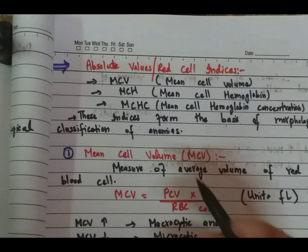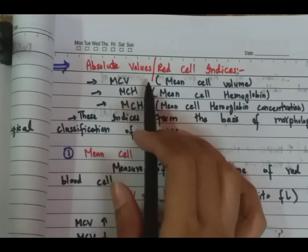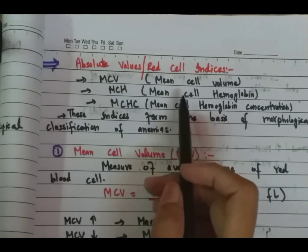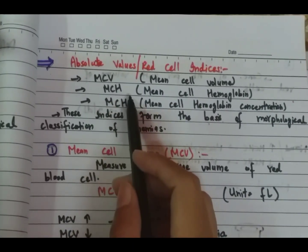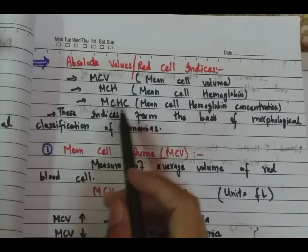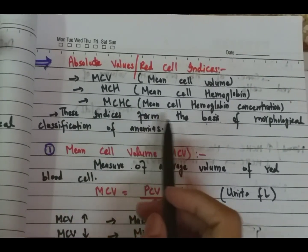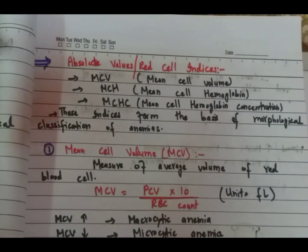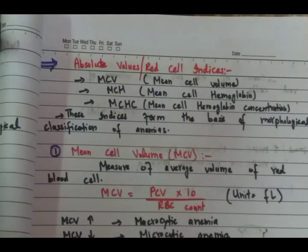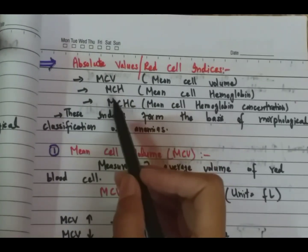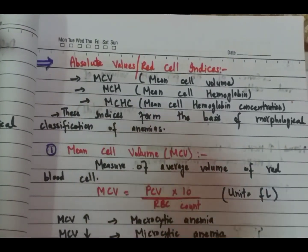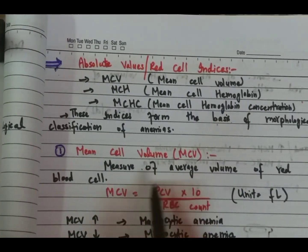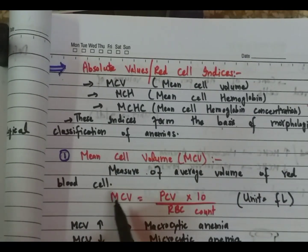In today's lecture, we will discuss absolute values — red cell indices. These are MCV (mean cell volume), mean cell hemoglobin, and mean cell hemoglobin concentration. These indices form the basis of morphological classification of anemias. We can classify anemias based on morphology and the mean cell hemoglobin and mean cell volume of red blood cells.